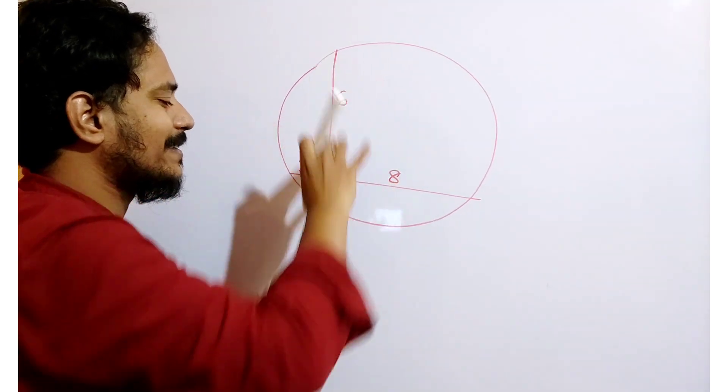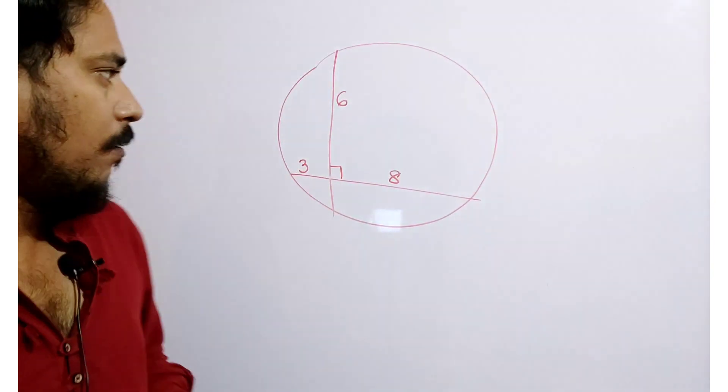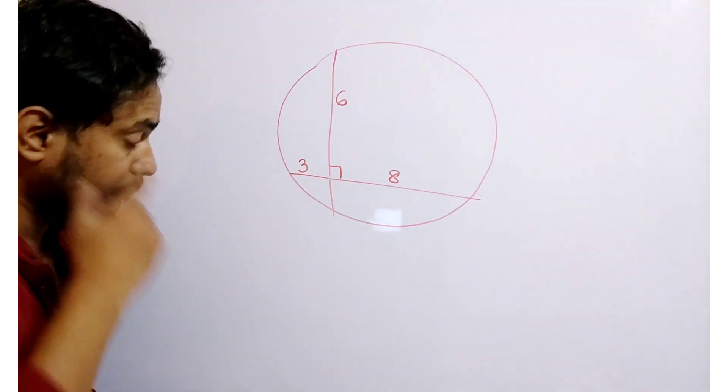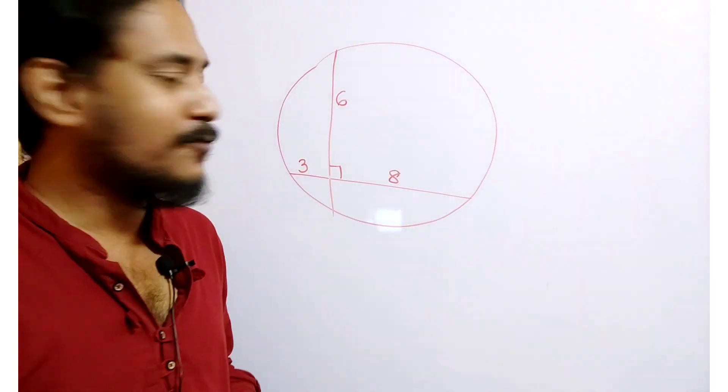this one is 3, this one is 6. You have to find the radius of this circle. Pause this video and give it a try to solve this one.